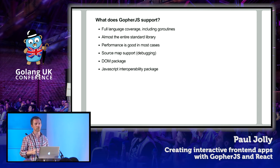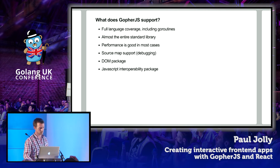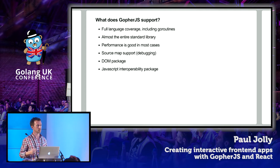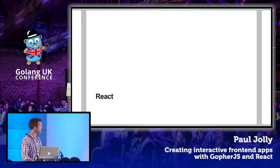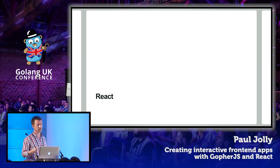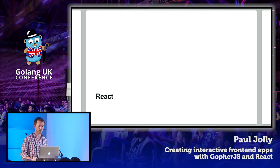JavaScript is still a hugely popular language, so it's unsurprising there's this wealth of packages and libraries we can use. We can write Go code, compile it to JavaScript so it runs in the browser. There are lots of existing JavaScript libraries out there, and we want to take advantage of those instead of reinventing the wheel. This is where React comes into things. React is hugely popular — there are 75,000 stars on the React package alone. From my perspective, it's actually a really good pattern for developing front-end apps as well.